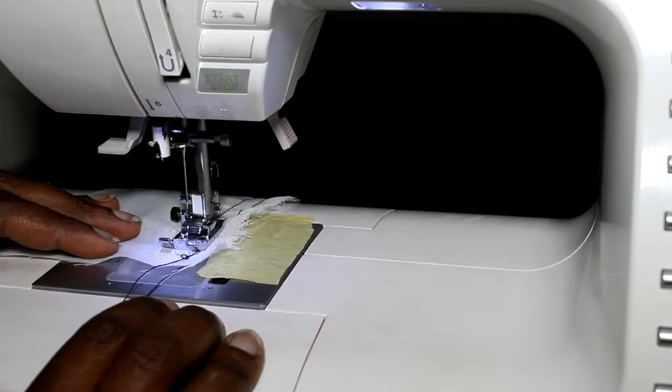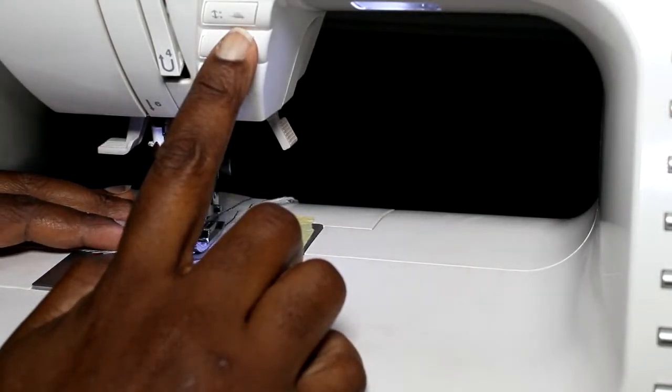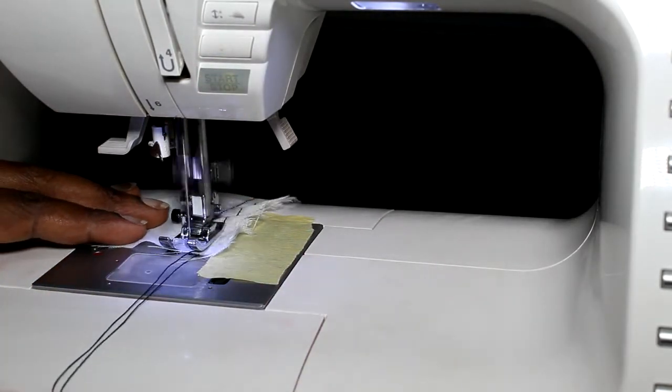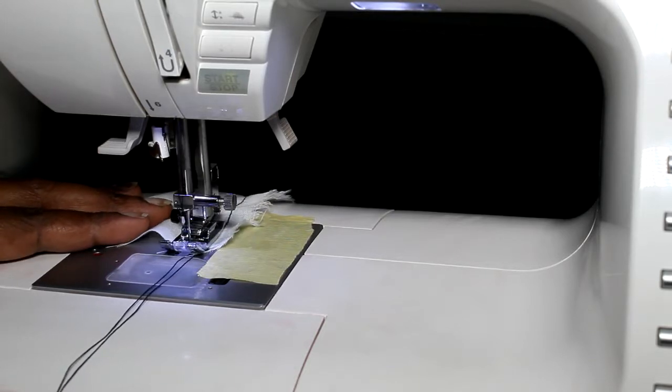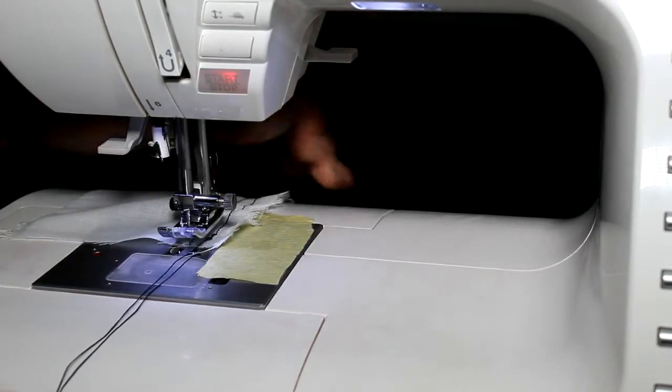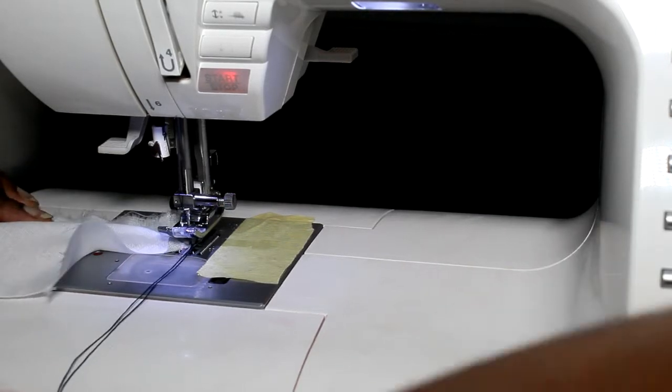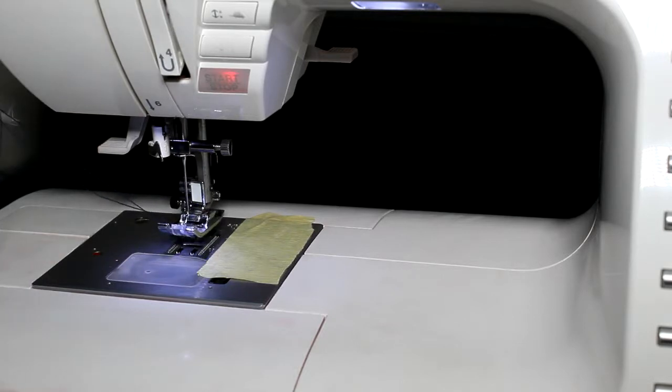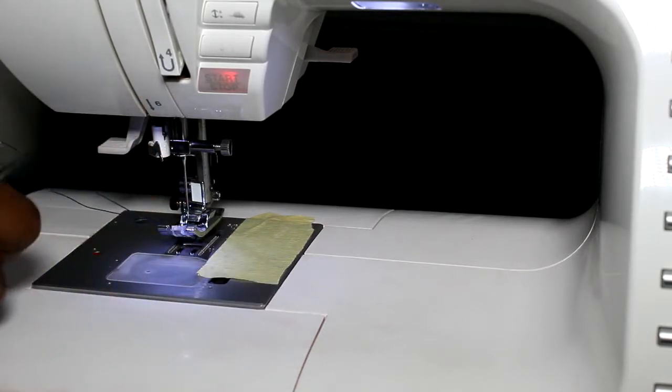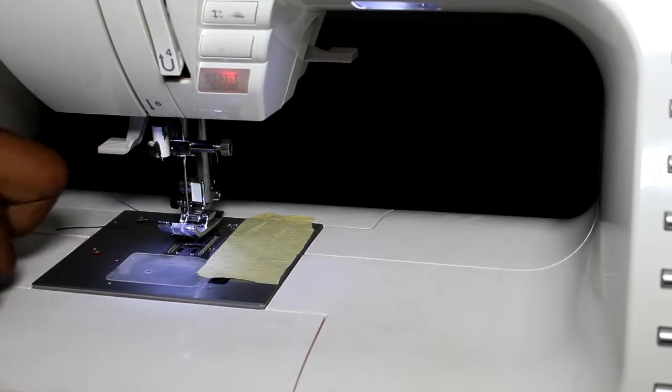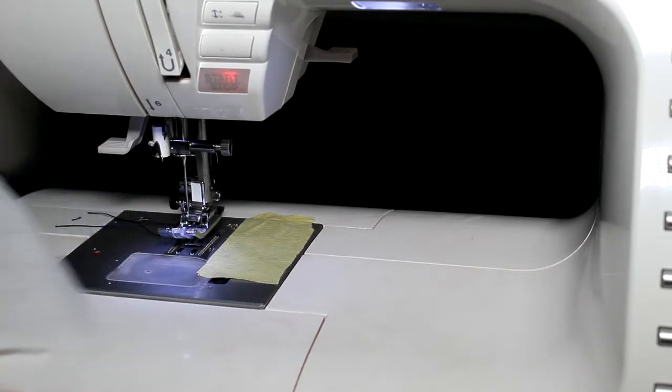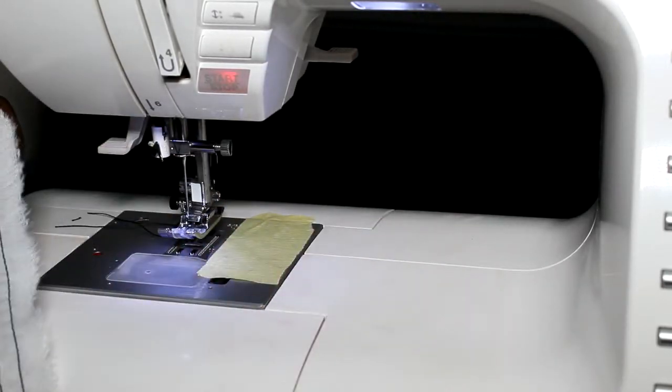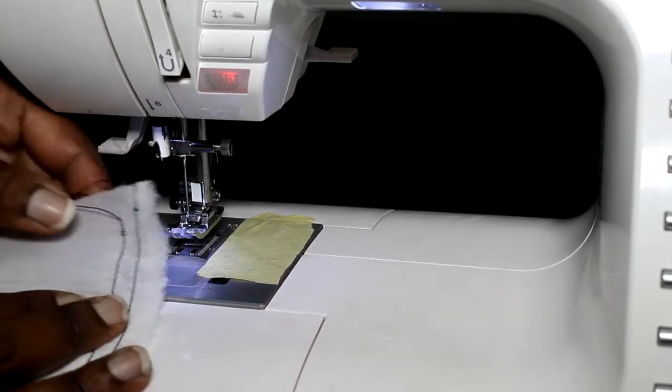When we get to the end, we'll backstitch again. Hold your reverse lever. Sew a few stitches backwards. One or two stitches and then sew forward and you've locked your stitch. Lift your presser foot, turn the fabric, roll your hand wheel. That disengages your tension. Your tension gets loose when your presser foot goes up. Once again, we have another line. So, that's a good way to practice. You do line by line by line.